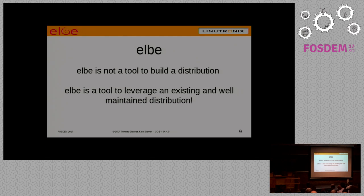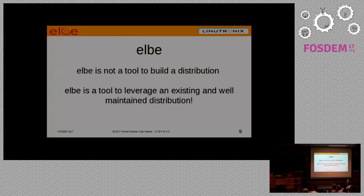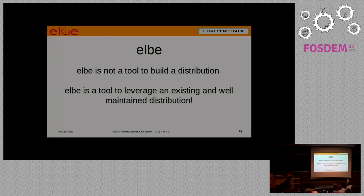Let me give you quick information about Alba itself. It's not a distribution and it's not a tool to build a distribution — there are a lot of tools out there for that, like Yocto and PTXdist. The problem for a lot of companies, especially smaller ones, is that once you build with Yocto you become a distributor, which means you're responsible for tracking bug fixes, security bugs, and all that. So we took another approach: we wanted a tool where we can leverage a well-maintained, existing distribution. That's what Alba does.